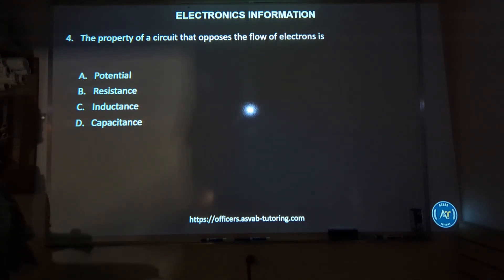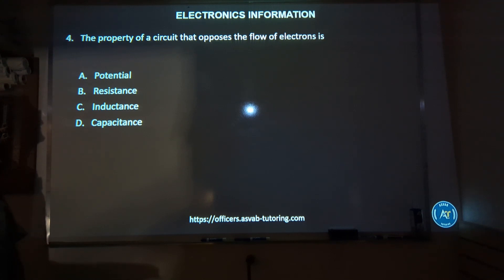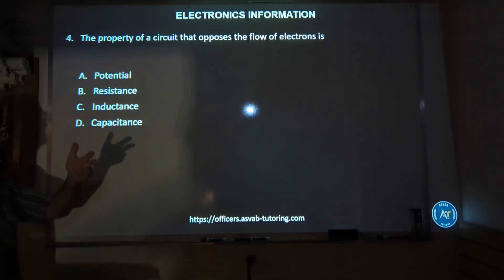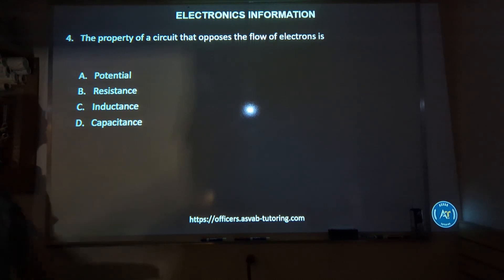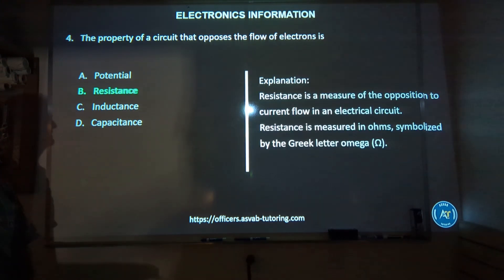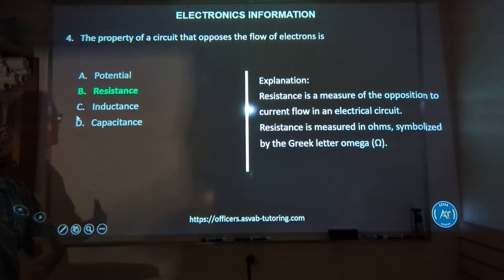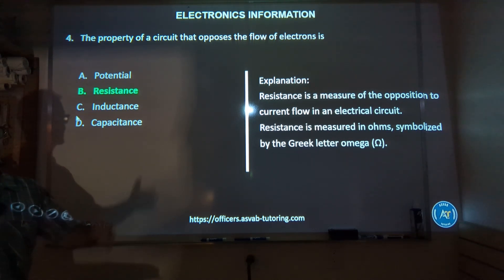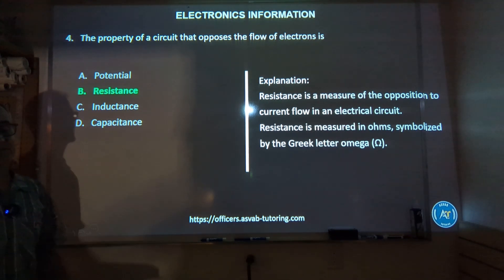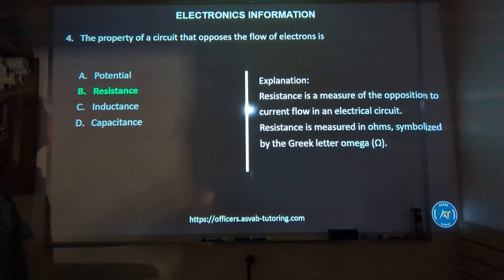Number four: the property of a circuit that opposes the flow of electrons — A, potential; B, resistance; C, inductance; D, capacitance. The correct answer is B, resistance. That word kind of makes sense — resisting the flow of electricity.